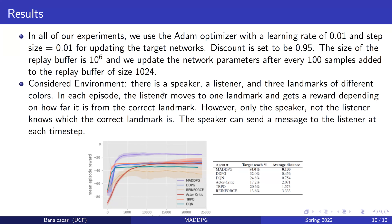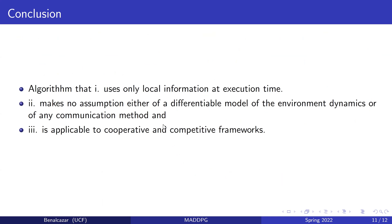They consider different environments but compare with all baseline algorithms in one of them: a cooperative communication task where there is a speaker, a listener, and three landmarks of different colors. In each episode the listener moves to one landmark and gets a reward based on how far it is from the correct landmark. Only the speaker knows which landmark is correct and can send a message to the listener at each time step. Comparing performance across algorithms, MADDPG is superior to all of them, including DDPG, Deep Q Actor-Critic, TRPO, and REINFORCE.